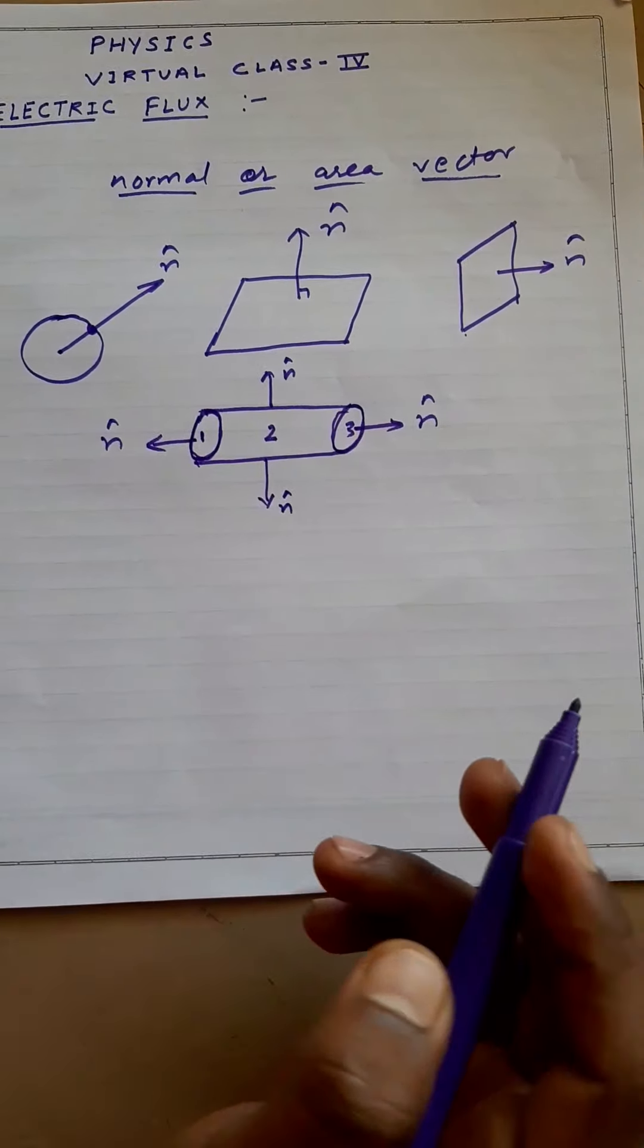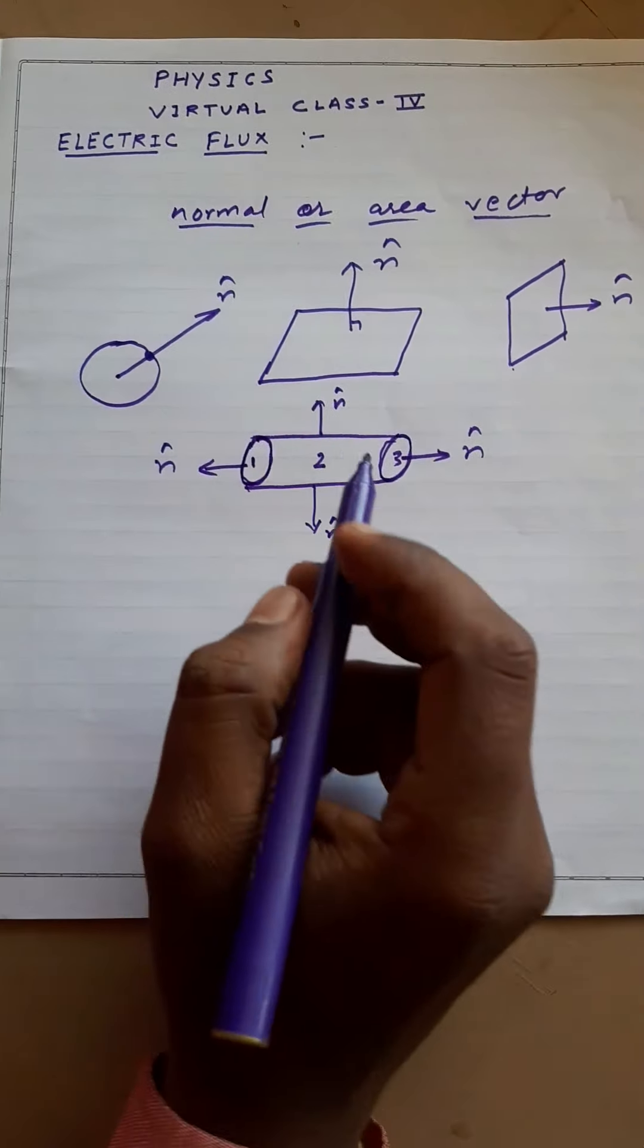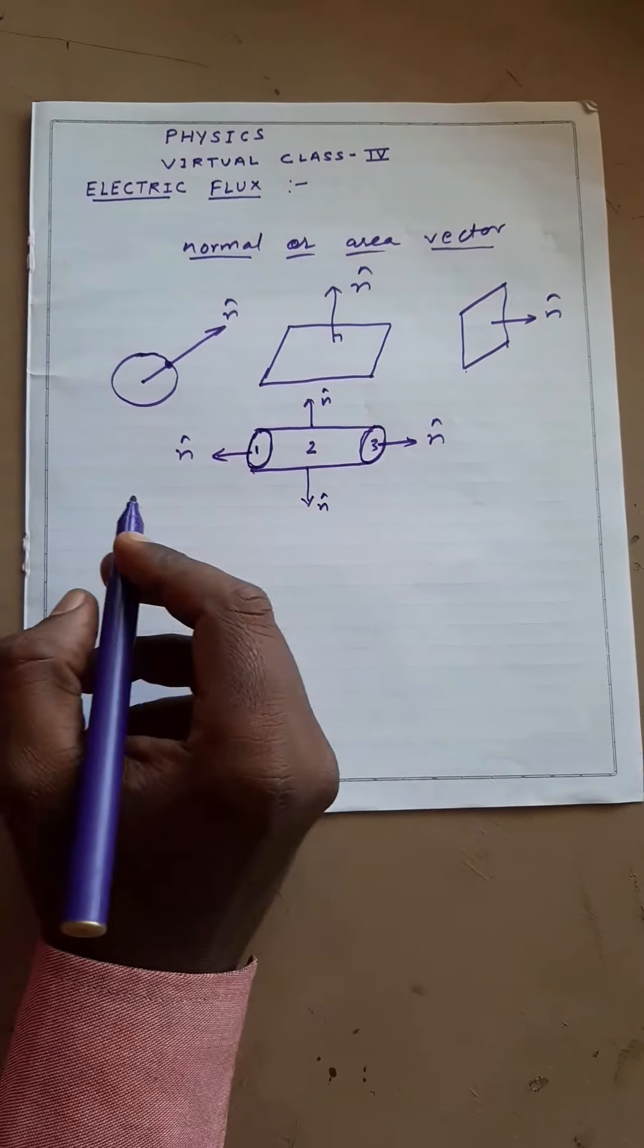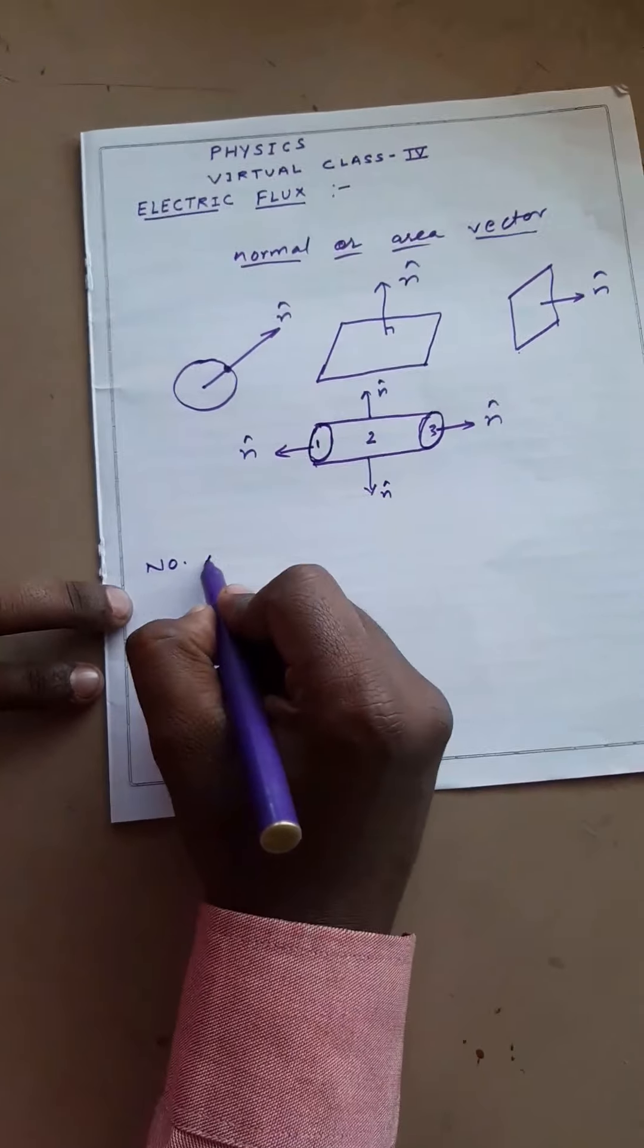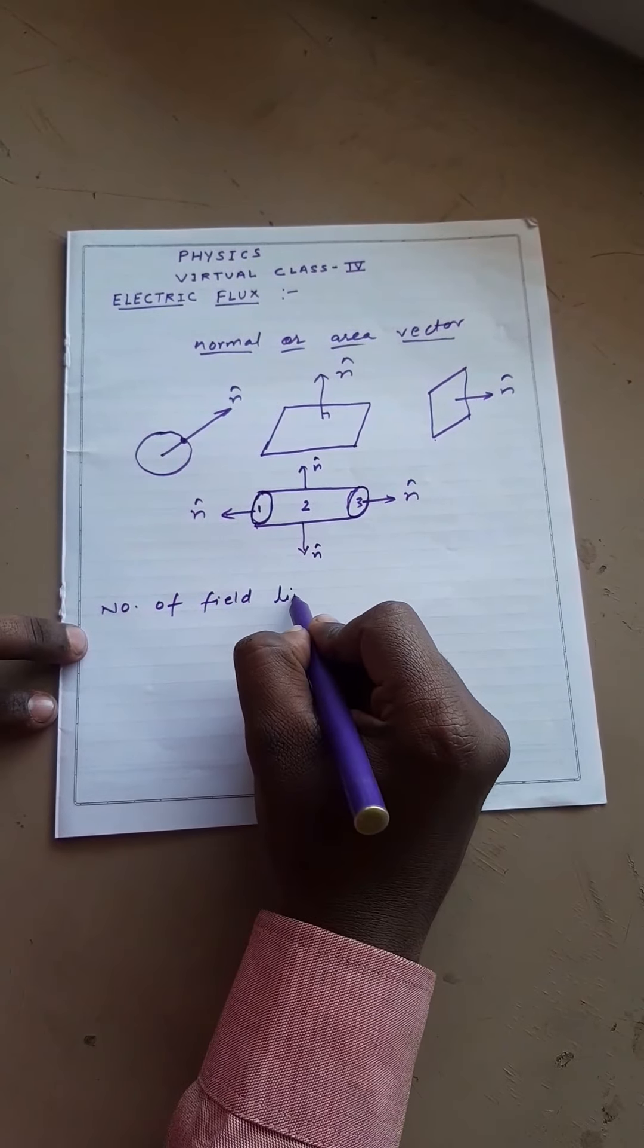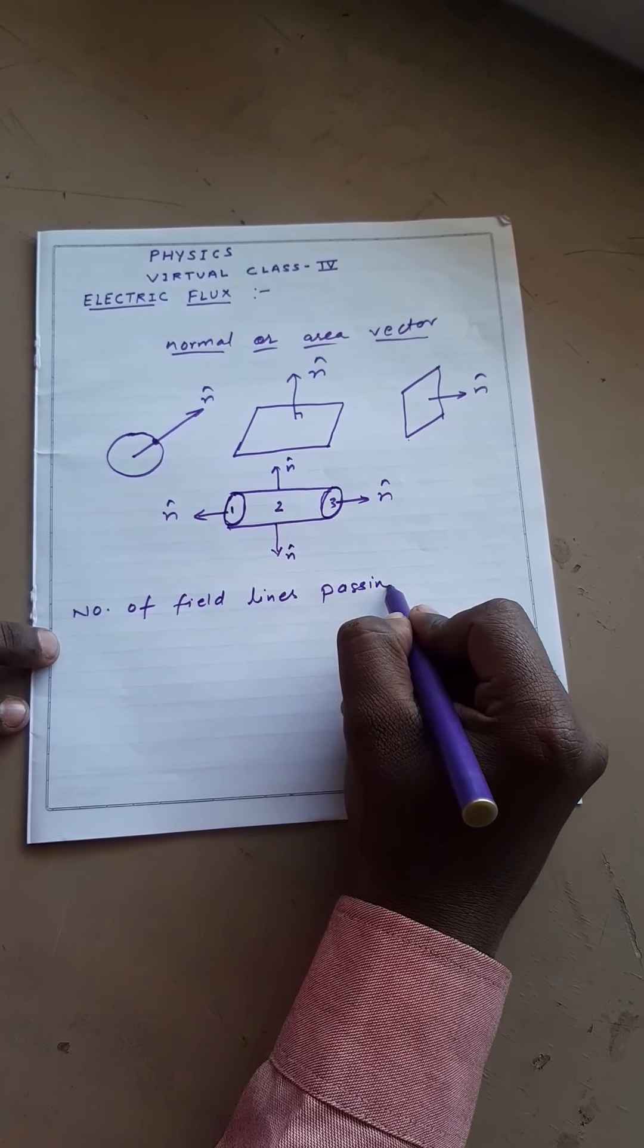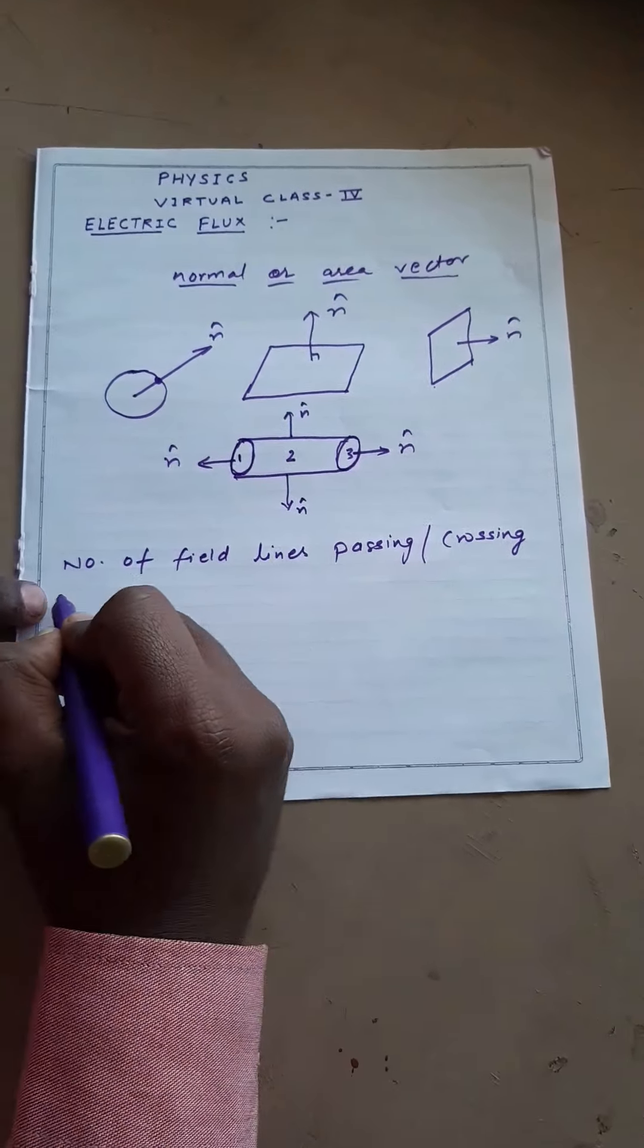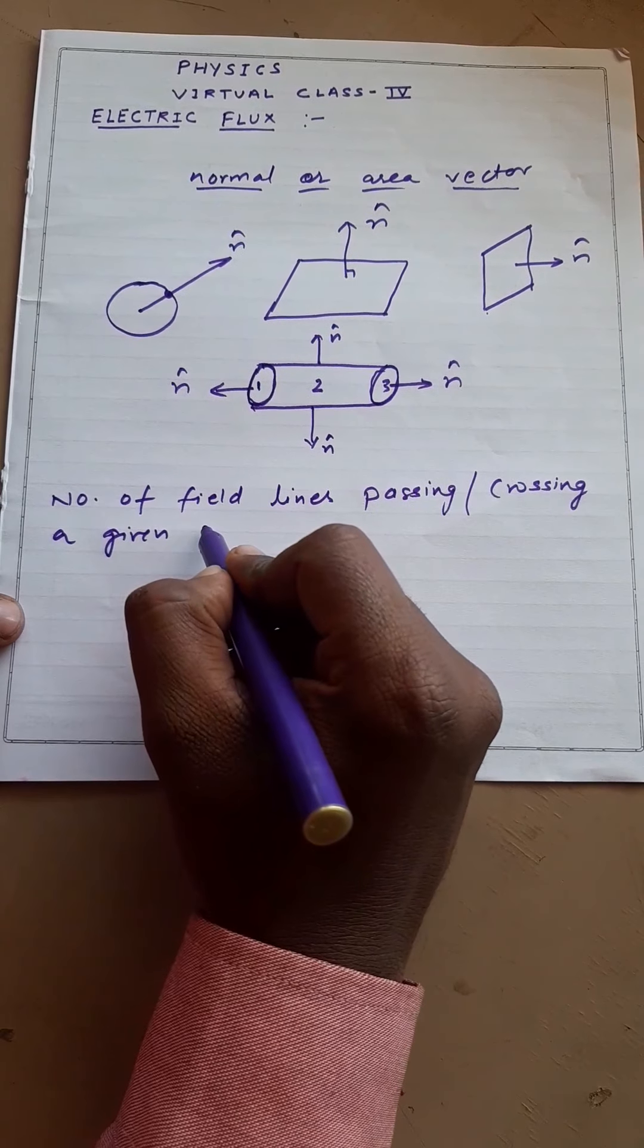Now, let us discuss about the electric flux. What electric flux is? Number of field lines passing or crossing a given area.